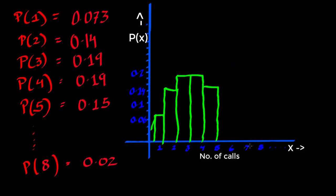Then I have took the probability of getting eight calls, so it will be 0.02. So it will be somewhere here, right?